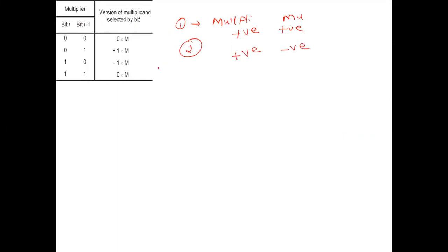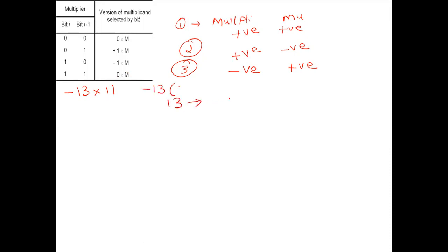This is Example 3 — I am going to take the multiplicand as negative and the multiplier as positive. So minus 13 into 11. To convert minus 13: first, 13 in binary is 1 1 0 1. The MSB is used to indicate the sign, so we get 0 1 1 0 1 as the magnitude.